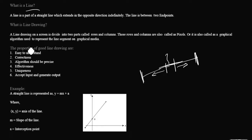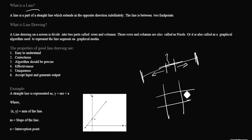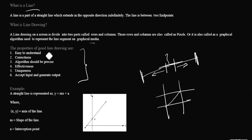A line drawing on a screen is divided into rows and columns. Whatever you are drawing here is divided into rows and columns, and everything depends on what you call a pixel. It is also called a graphical algorithm, used to represent the line segment on graphical media. The properties of good line drawing are: easy to understand, correctness, algorithm should be precise, effectiveness, uniqueness, and it accepts input and generates output.